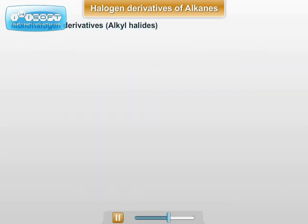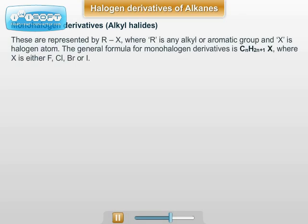Monohalogen Derivatives of Alkanes are also known as Alkyl Halides. These Alkyl Halides are represented by the formula RX, where R may be Alkyl or Aryl, that is an Aromatic group. The general formula for Monohalogen Derivatives is CnH2n+1X, where X is equal to either Cl, Br, or I.